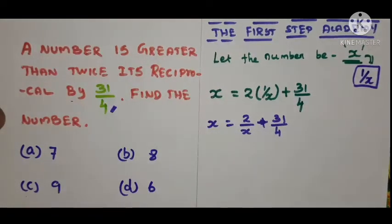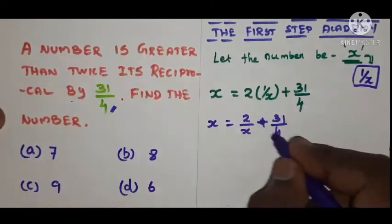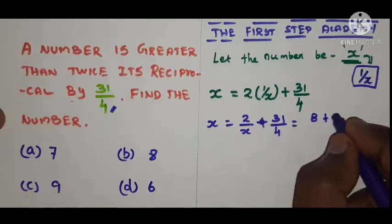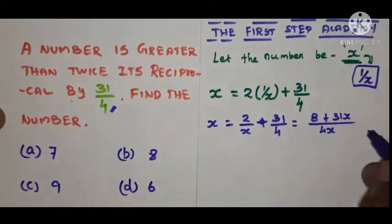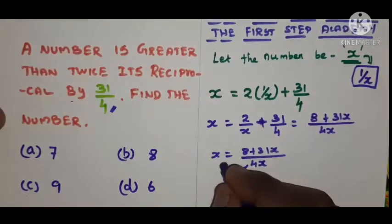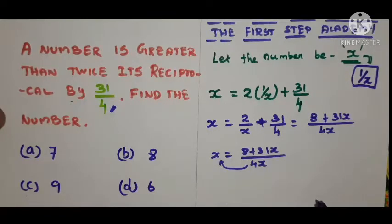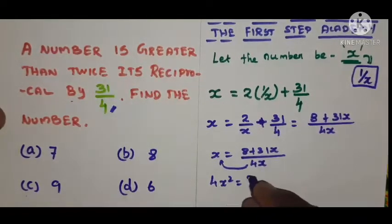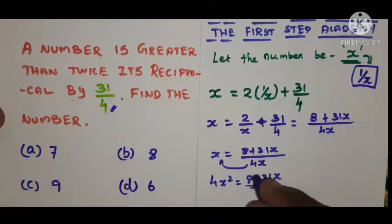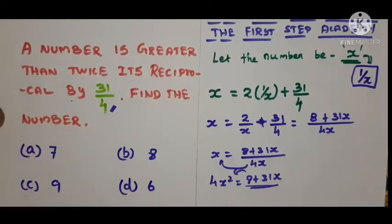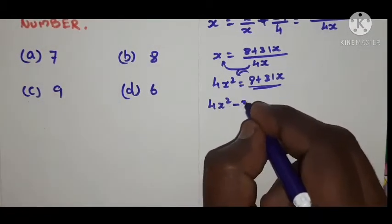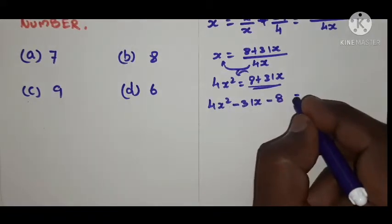Now we need to cross-multiply. When we do the cross multiplication, 4 into 2 is 8, so we get x = (8 + 31x) / 4x. This 4x comes to the left-hand side and becomes 4x². So 4x² = 8 + 31x. Now we bring all terms to the left-hand side to form a polynomial: 4x² − 31x − 8 = 0.